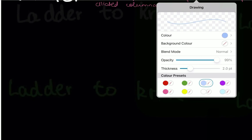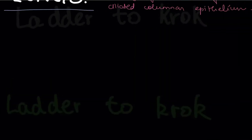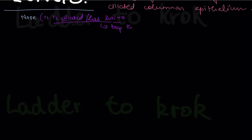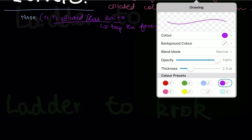Let's start with the respiratory system before moving on to the lungs in detail. Starting with the nose — the nose has cilia, which are hairs in your nose. These cilia trap foreign substances, like dust going inside, so they don't enter your lungs.